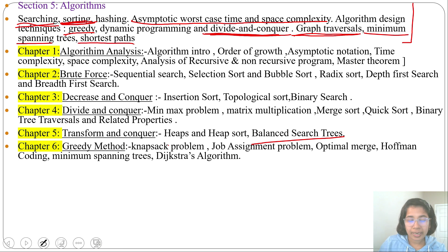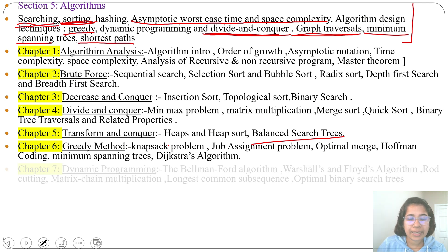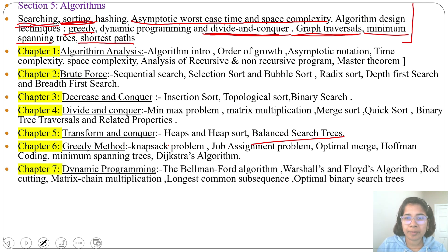Next, Chapter 7: Dynamic Programming. Dynamic programming is also used for finding optimal solution. Just go through the lecture where I discussed what is difference between greedy method and dynamic programming. Here I discussed Bellman-Ford algorithm, Warshall's and Floyd's algorithm that comes under shortest path, then rod cutting, matrix chain multiplication, LCS, and optimal binary search tree that comes under dynamic programming.